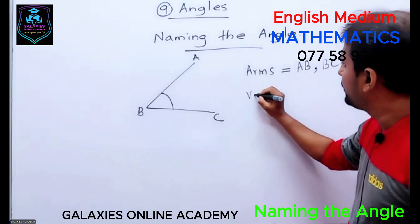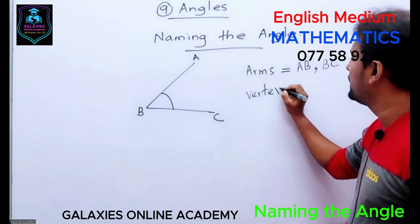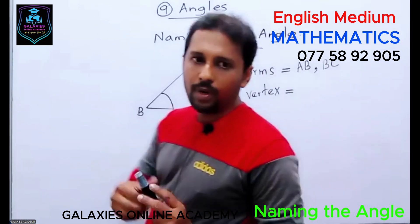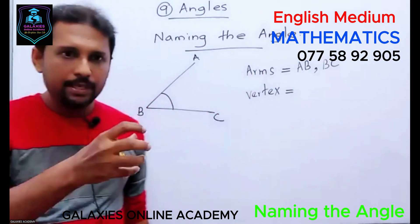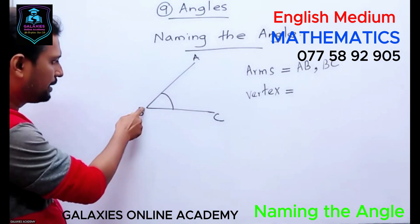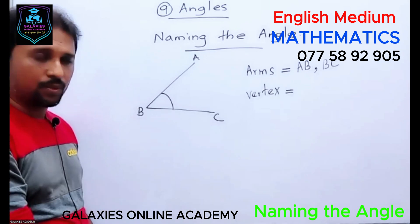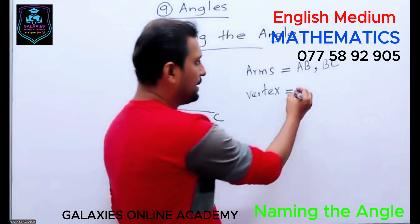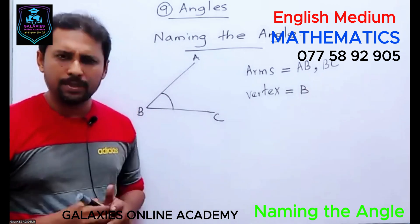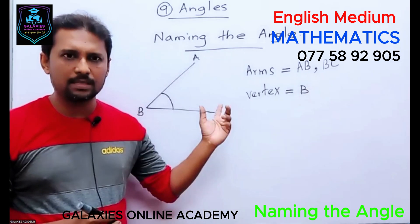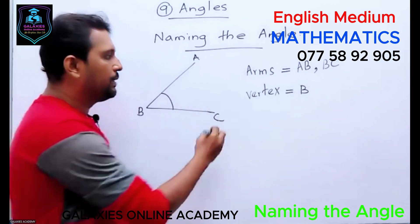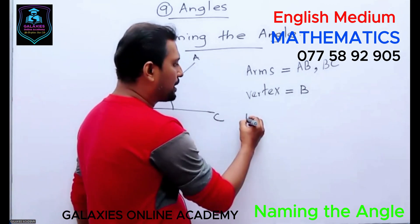Can you tell me what is the vertex of this angle? Vertex means the point — the middle point. This point is B, so the vertex is B. Are you clear? Can you understand arms and vertex?